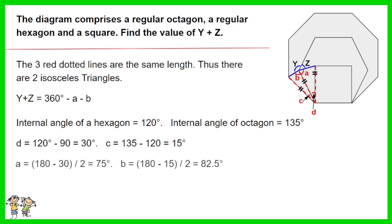A equals 180 minus 30 then divided by 2, which is 75 degrees. B equals 180 minus 15 then divided by 2, which is 82.5 degrees. Thus Y plus Z is equal to 360 minus 75 minus 82.5. The answer is 202.5 degrees.